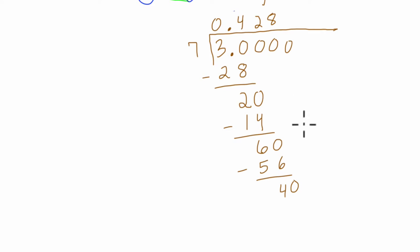We keep going with our 0s here, line them up. 7 goes into 40 five times. 7 times 5, 35. Okay, keep going. 40 minus 35 is 5.